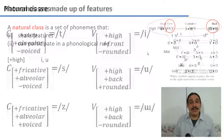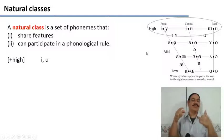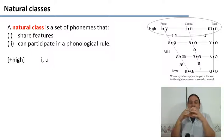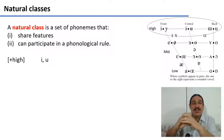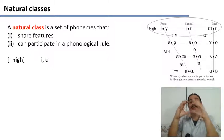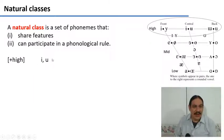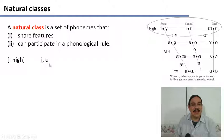So phonemes are bundles of features, and phonemes can have the same features as other phonemes. If we have a group of phonemes that share features, we're going to call that a natural class. For example, the sounds E and U share some features — for example, they share the feature [+high] — and this makes these two sounds a natural class.